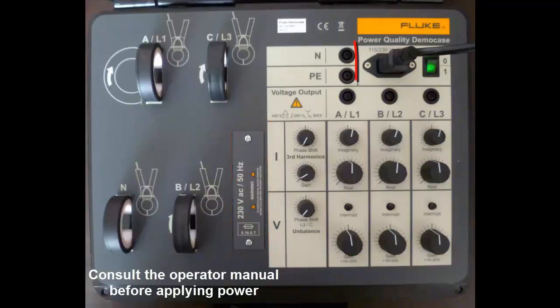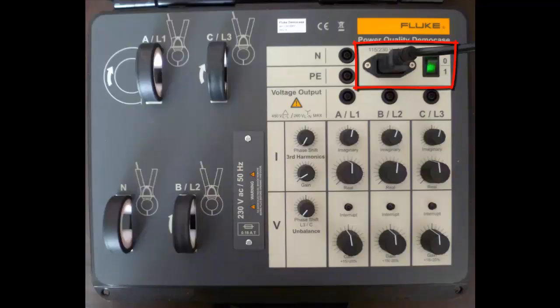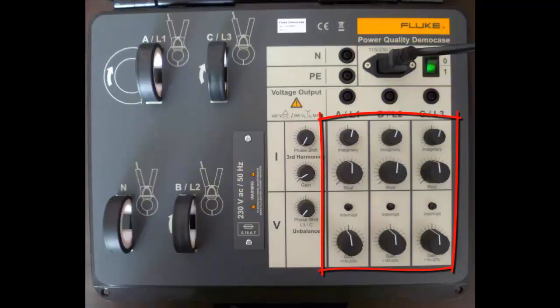The single phase power is applied using a power cord. There is a switch which you can turn the demo case on and off with. This area of the demo box has the controls for voltage and current. These are split into three separate areas.